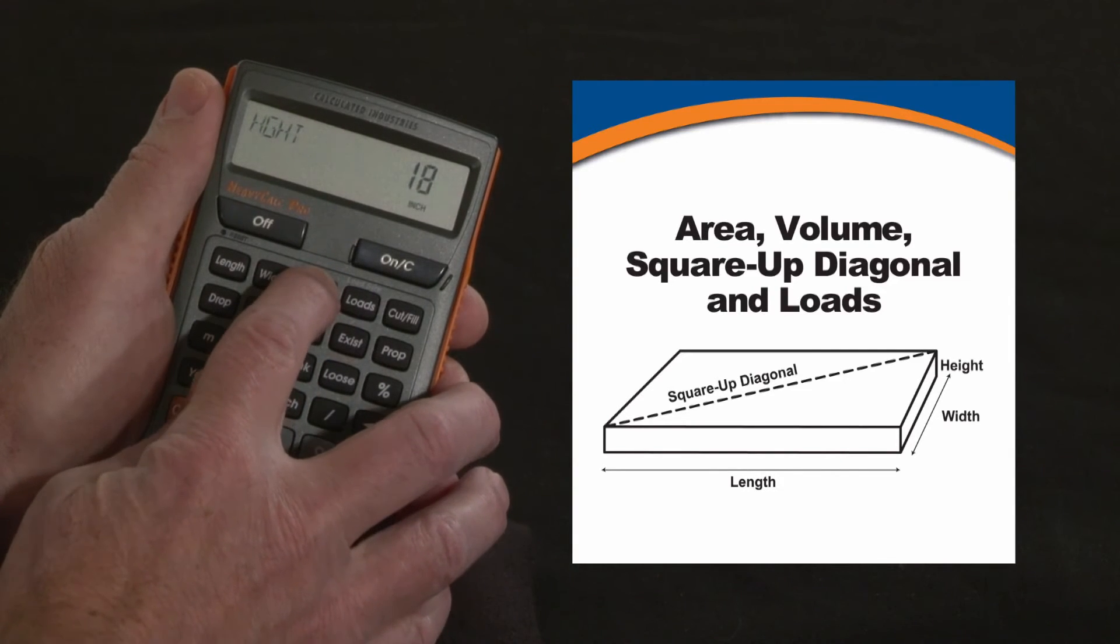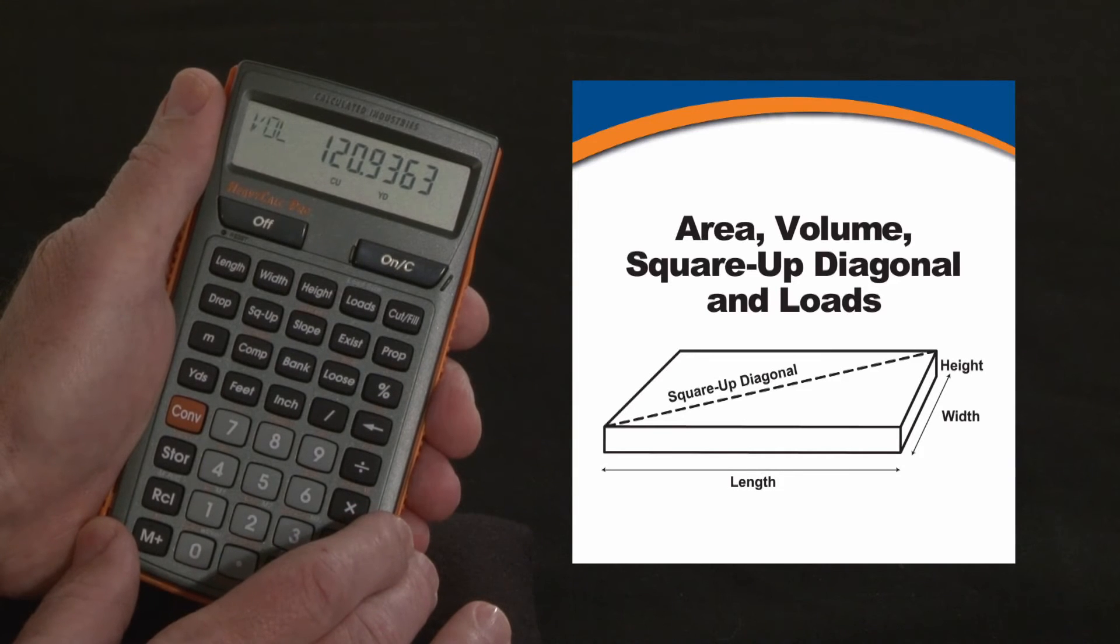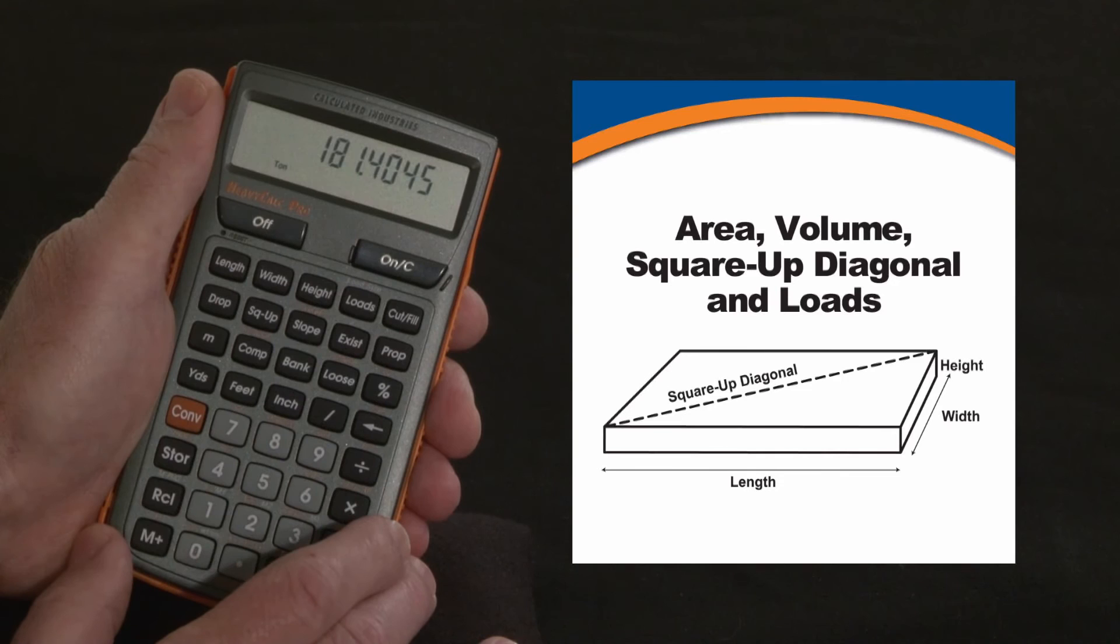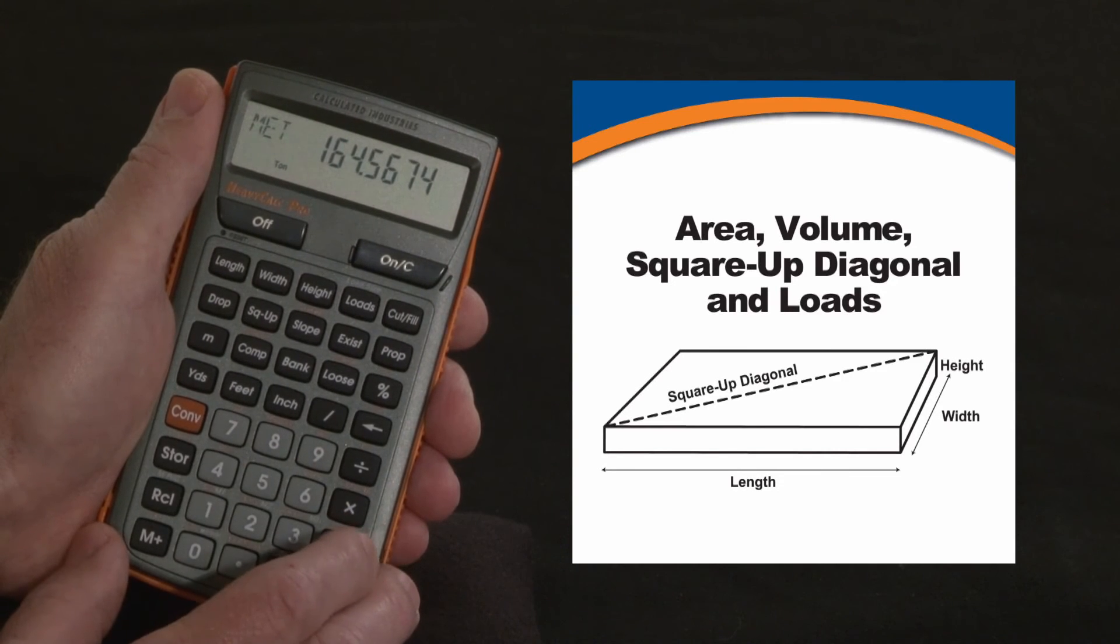If we come back to the volume, 120 cubic yards, we can also convert that to tons. So we hit convert over the sixth key, it says tons. So 181 tons. You can also convert to metric tons if that's your unit of choice.